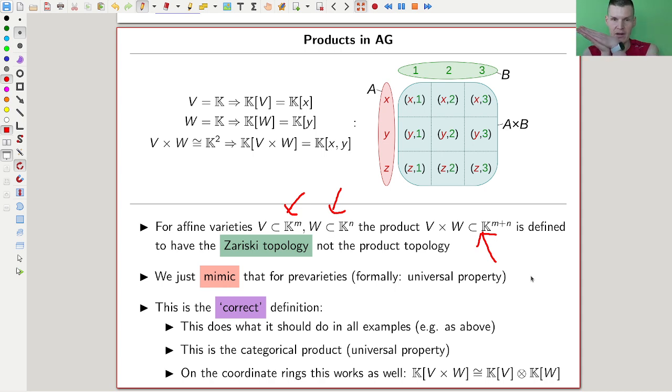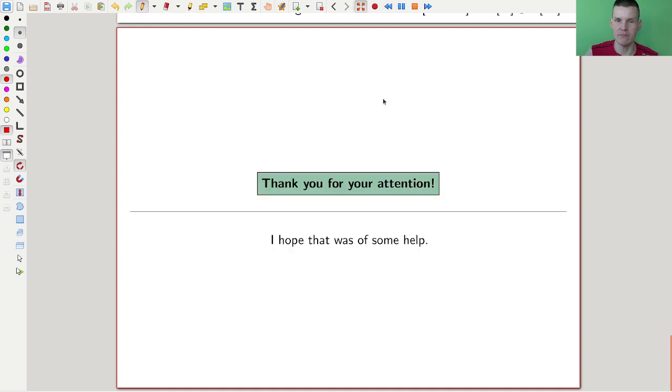So again, Zariski is really badly behaved with respect to topologies. You need to impose the Zariski topology, not the product topology. The even better way of saying that is this correspondence to algebra. And in algebra, the product should be the tensor product of spaces. Here's a nice example of what that is. So if V is K and W is K, then their coordinate rings are polynomial rings. So the coordinate ring of V × W should be just a polynomial ring in two variables. So if you just mimic that, you just put the Zariski topology on the product.